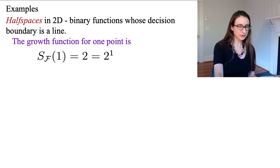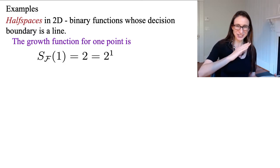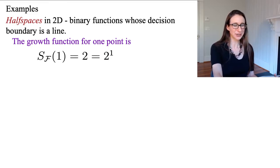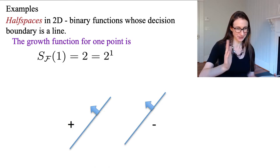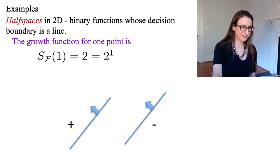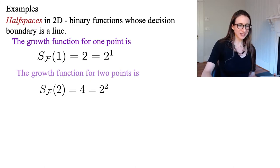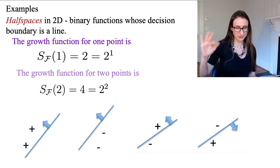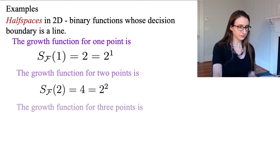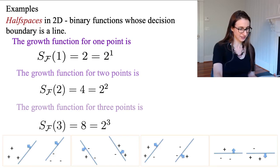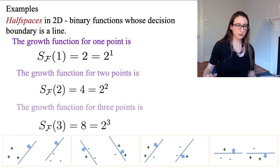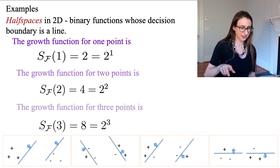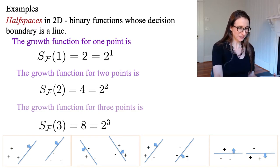Let me give some examples using half-spaces in two dimensions — binary functions whose decision boundary is a line. The growth function for one point is 2, since a point is either positive or negative — that's 2^1. For two points it's 4, since there are four ways to classify two points — 2^2. For three points it's 8, all 8 possible classifications, with the points in the best configuration — a triangle, not collinear. That's 2^3.